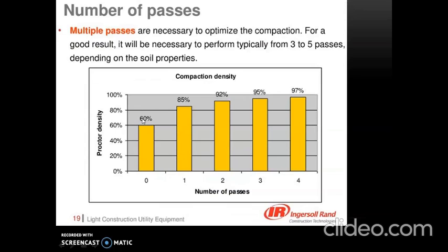The second operator-controlled parameter is the number of passes. As the number of passes of the rollers increases, the density increases. Here we can see that passes have been increased from 1, 2, 3, to 4 units and there is a gradual increase in density as the number of passes increases.